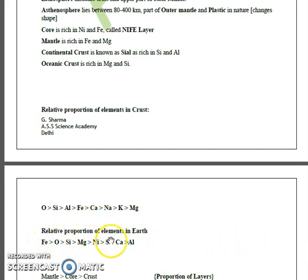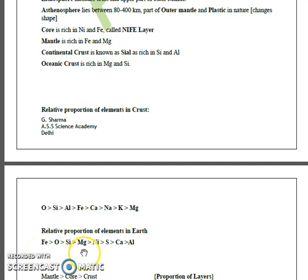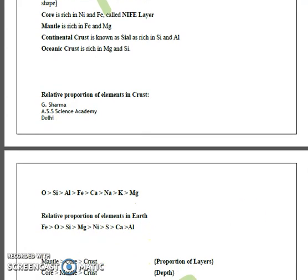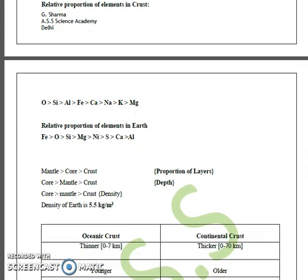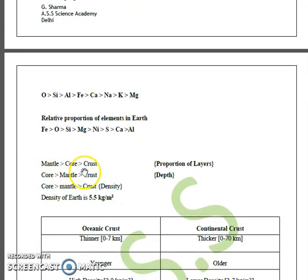Another question commonly asked is about the relative proportion of elements in Earth as a single unit. The mnemonic here is 'FEOSIMANISCAL' — the order is iron, oxygen, silicon, magnesium, nickel, sulfur, calcium, and aluminum. When comparing the proportion of the three layers, the mantle has the most proportion, followed by the core, followed by the crust.